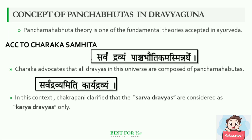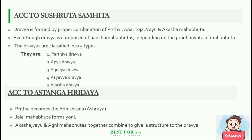Sarvadravyam iti karyadravyam. In this context, Chakrapani clarified that all Sarvadravyas are considered as Karyadravyas only. According to Shushruta Samhita, Dravya is formed by the proper combination of Prithvi, Apa, Teja, Vayu and Akasha Mahabhutas. Even though Dravya is composed of Pancha Mahabhutas, depending on the pradhanyata of Mahabhutas, the Dravyas are mainly classified into five types.